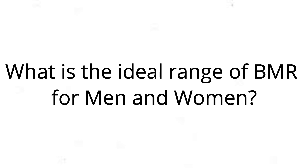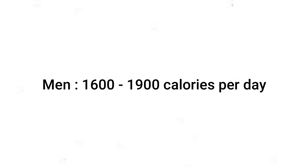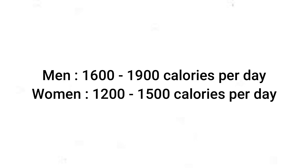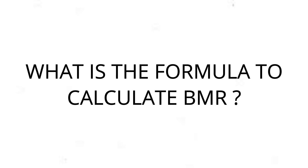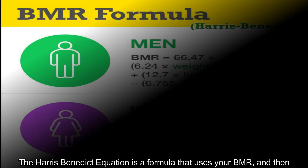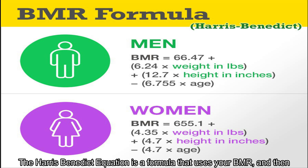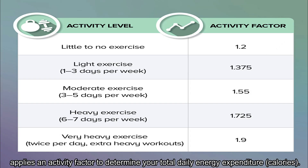What is the ideal range of BMR for men and women? For men it's 1600 to 1900 calories per day, and for women it's 1200 to 1500 calories per day. However, this is variable. The Harris-Benedict equation is a formula that uses your BMR and then applies an activity factor to determine your total daily energy expenditure, that is calories.